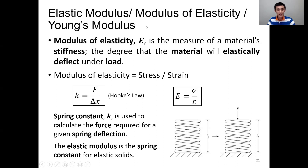In the last video, we talked about stress and strain. So we defined the ratio of stress over strain as Young's modulus. Young's modulus, modulus of elasticity, or elastic modulus — those three terms are the same thing. They're all stress over strain, which is E, Young's modulus.